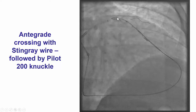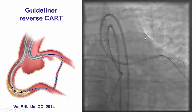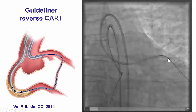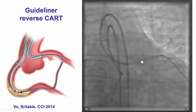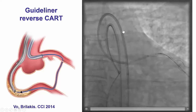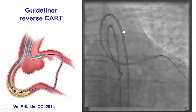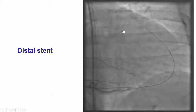We advanced the antegrade Stingray wire, trying to do a crossing with Pilot. We were then able to predilate and advance a retrograde wire from the retrograde Corsair all the way into the antegrade guide liner and into the antegrade guide catheter.